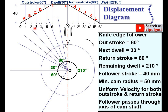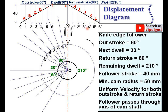Label the out stroke divisions as 0, 1, 2, 3, 4, 5, 6. Similarly, divide the return stroke angle and label the divisions as 0', 1', 2' up to 6'.